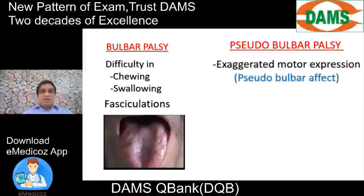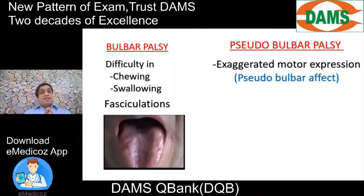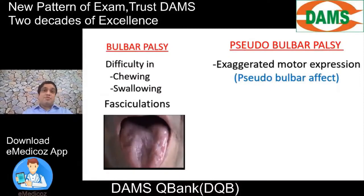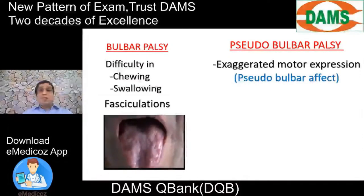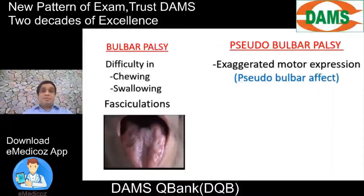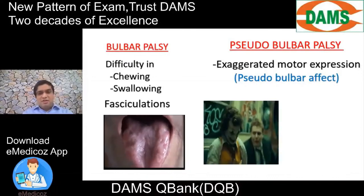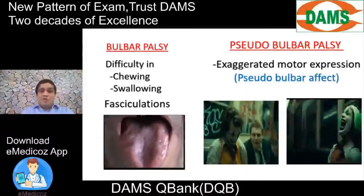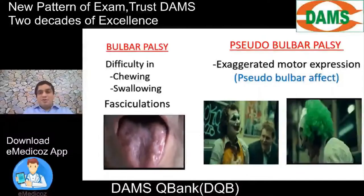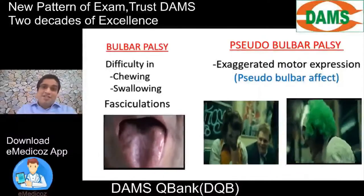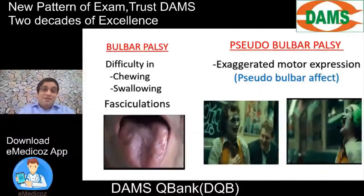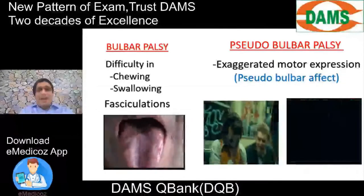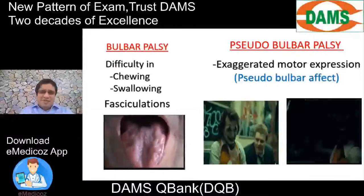Pseudobulbar palsy has another interesting feature: exaggerated emotional expression, also known as the pseudobulbar effect. When the person feels very sad, they cry excessively; when feeling happy, they laugh loudly. A 'joker' would be the perfect example of a pseudobulbar effect. It is also called labile affect, as the mood changes very frequently.